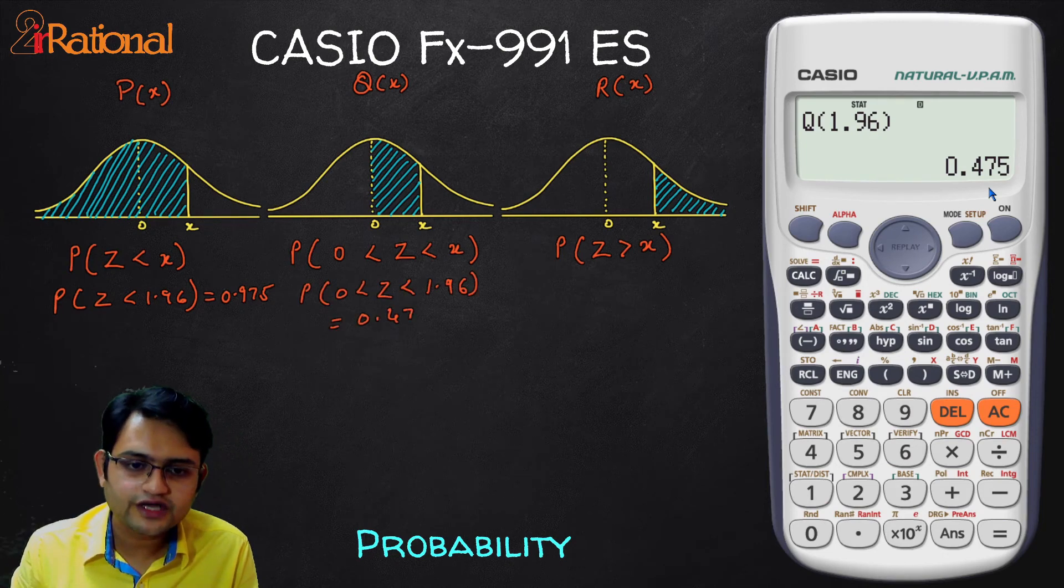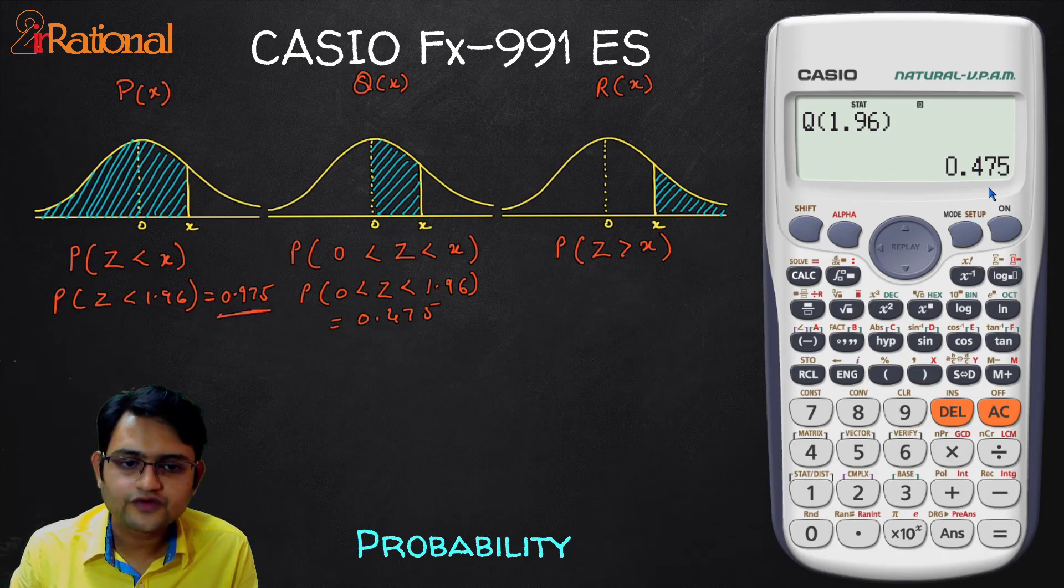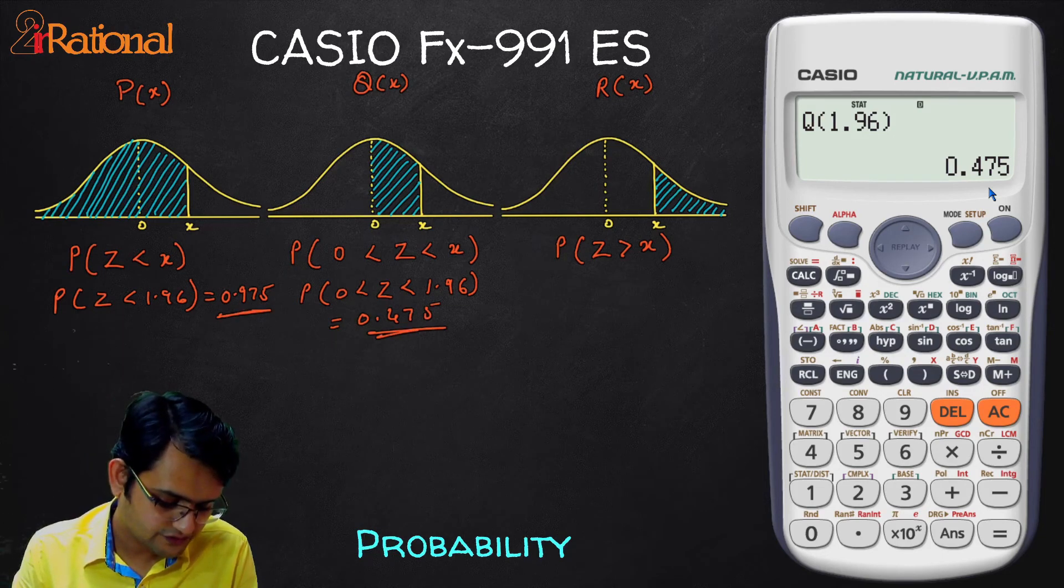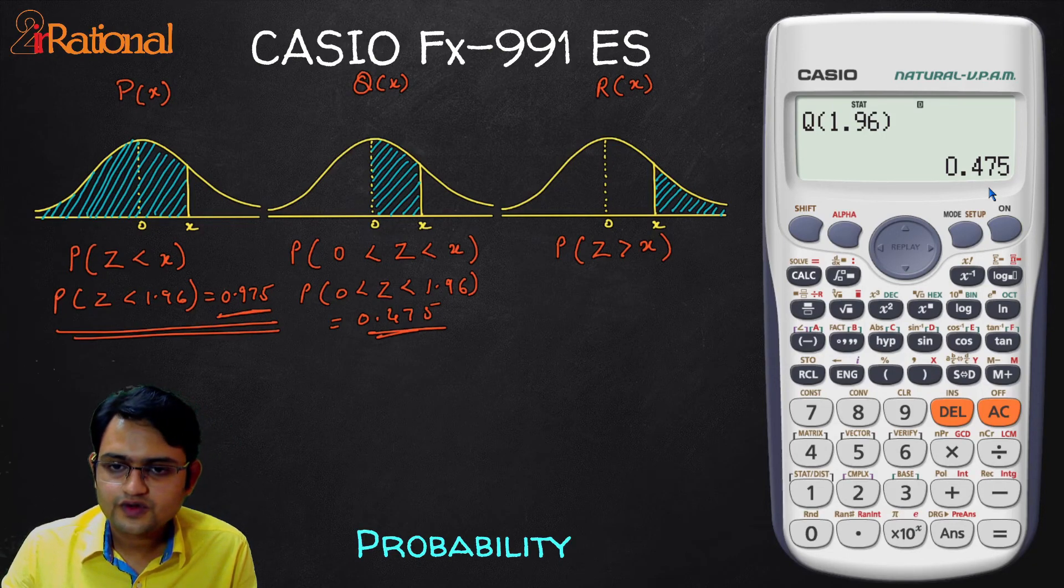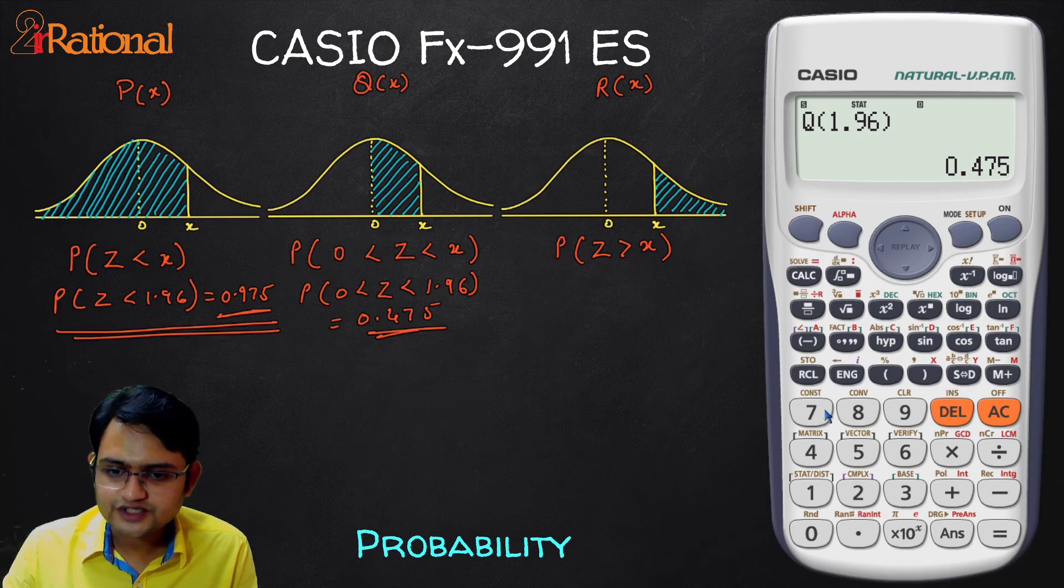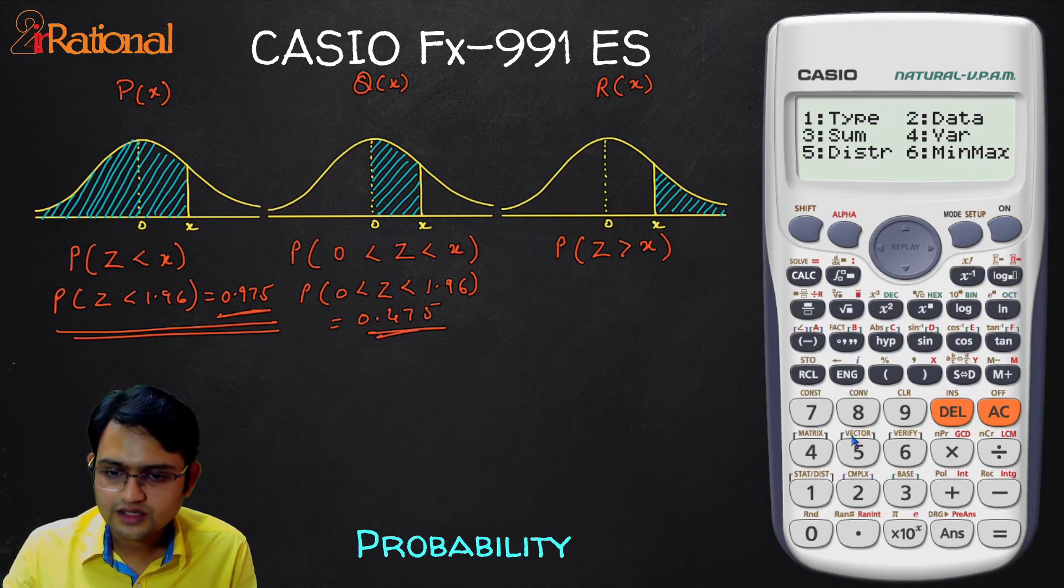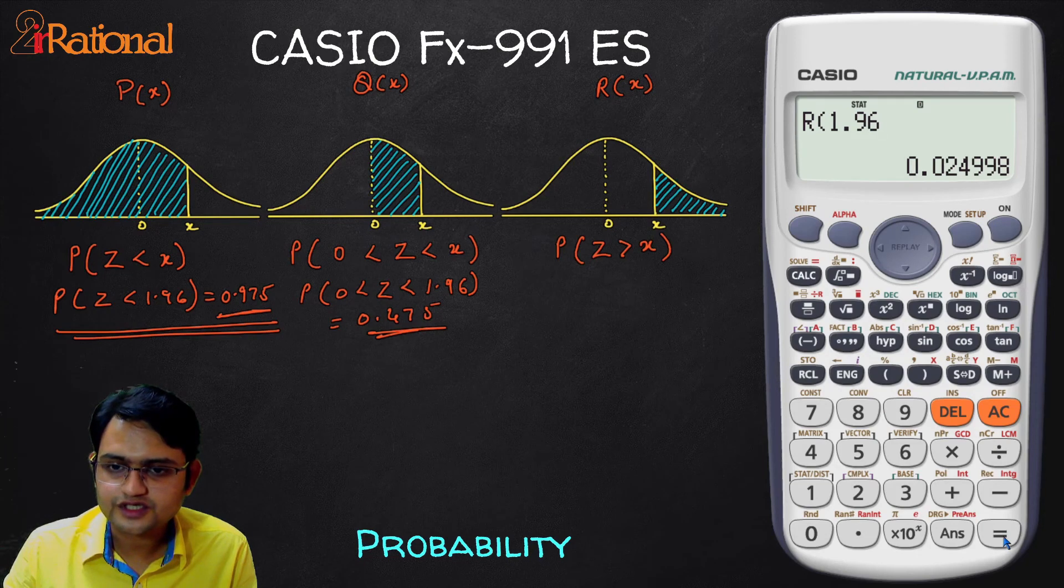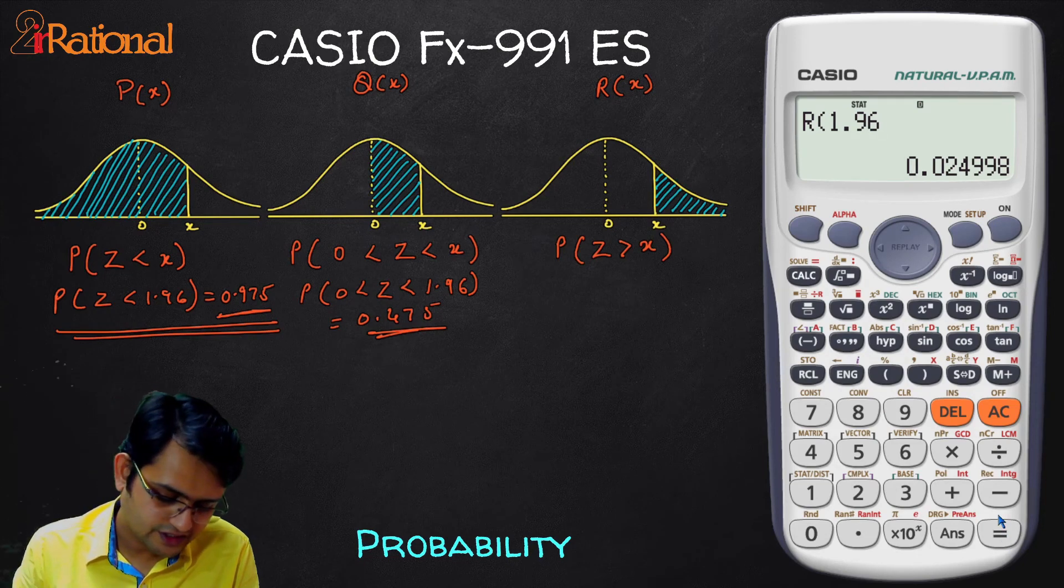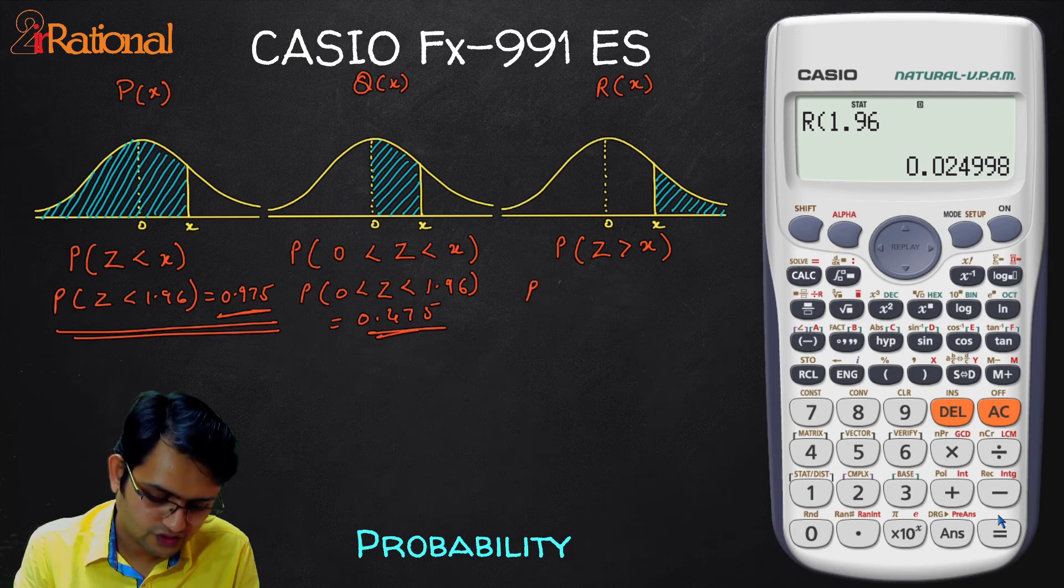And if I want greater than, all I have to do is 1 minus of this, that means I should see 0.025. We'll check that as well, I'll press shift, 1, 5, we'll go to 3. Here if I put 1.96 and if I press equal to, we'll see it is nearly 0.025.